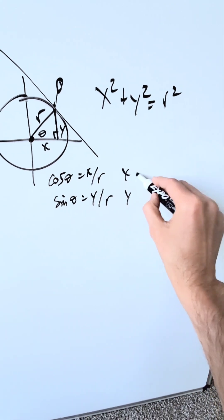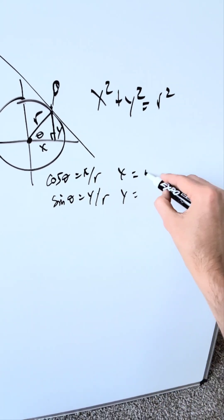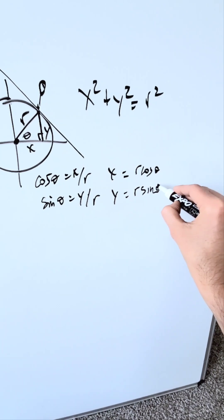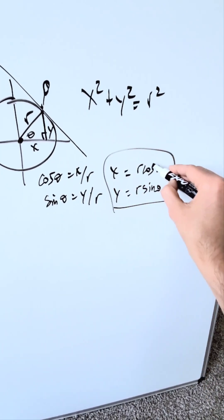Solve for x and y. x here is equal to, you just push the radius on the other side, r cosine theta. And y is equal to r sine theta. These are parametric equations you've developed. Let's set them aside.